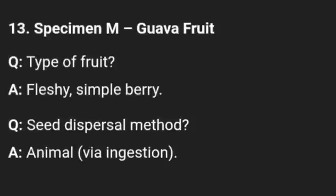Specimen M is guava fruit. The type of fruit is fleshy simple berry. The seed dispersal method is by animals — it is eaten by animals.